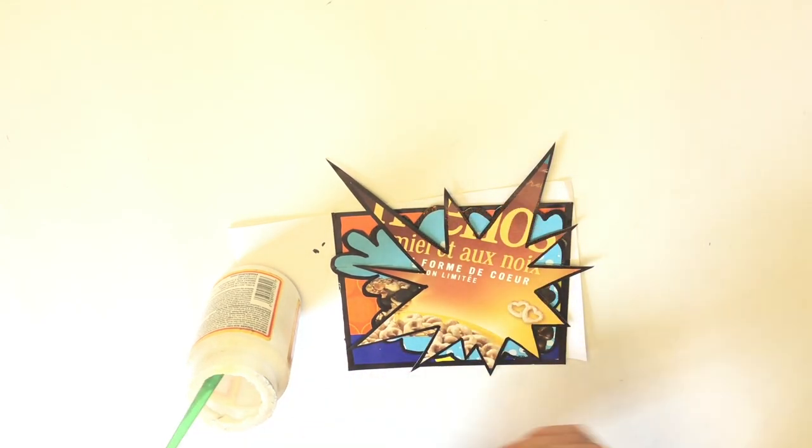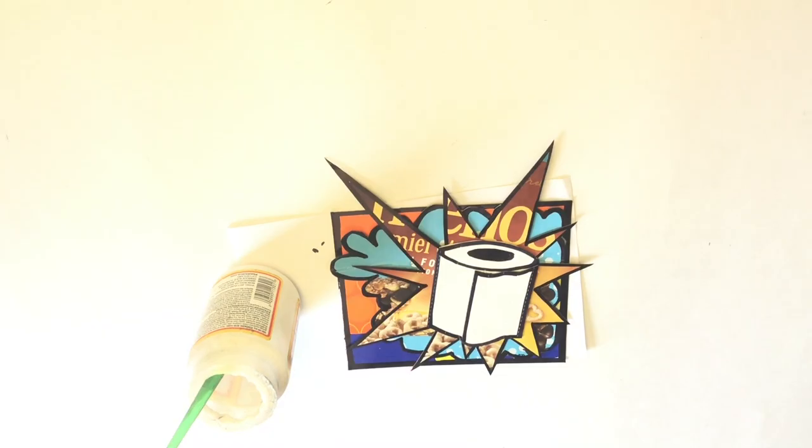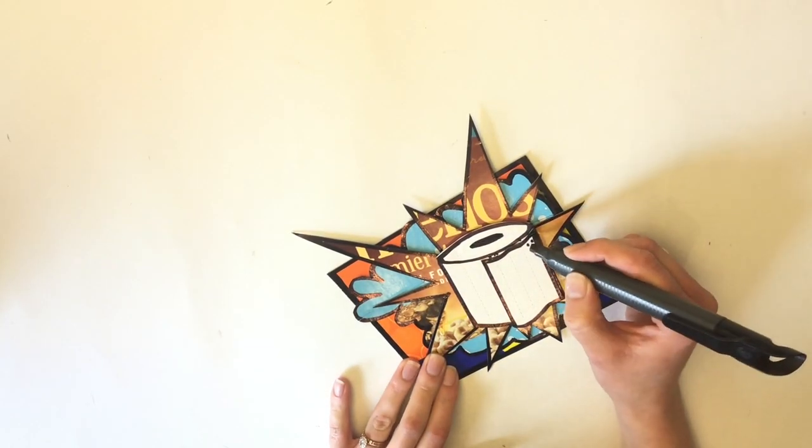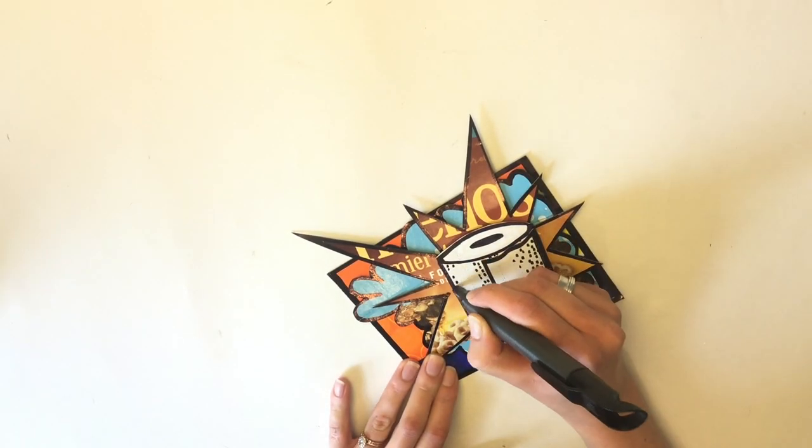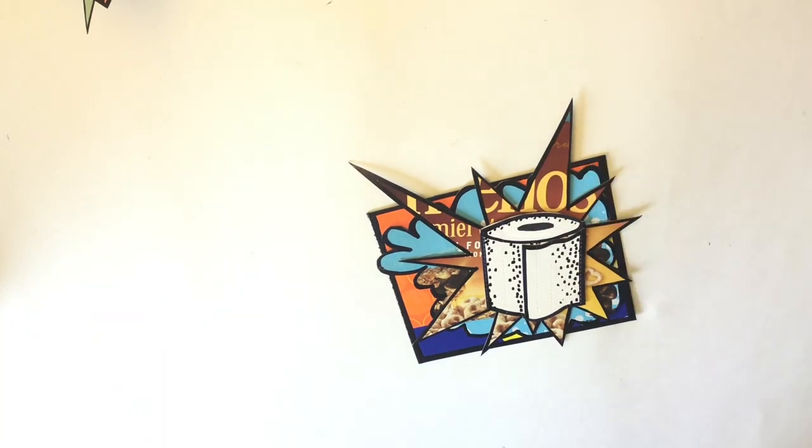The placement of your focal point in your art piece is super important, so I've decided to put mine in the bottom right corner instead of just in the center. That's a great way to make your work look a little bit more polished and dynamic.